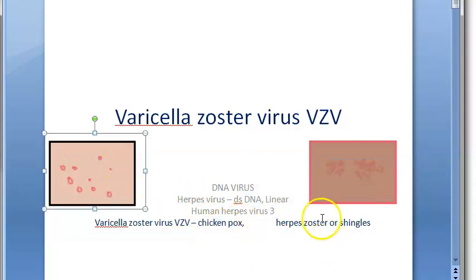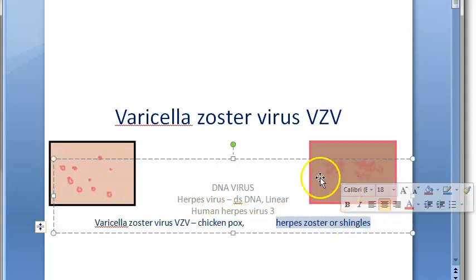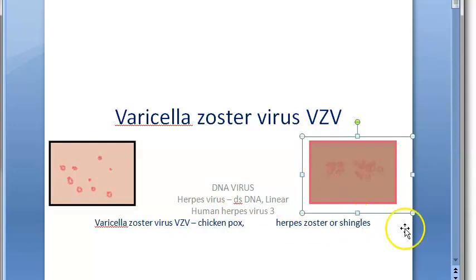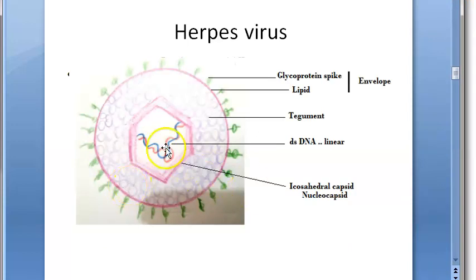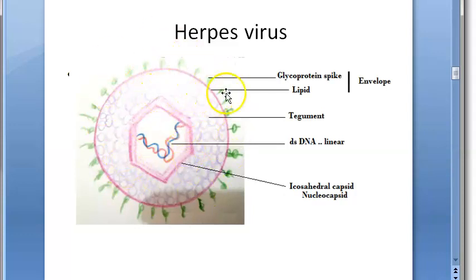It also causes herpes zoster or shingles. We have seen details about these diseases and the structure of the herpes virus — the double-stranded linear DNA, the icosahedral capsid, nucleocapsid, tegument, and a lipid envelope with glycoprotein spikes. You need to draw this diagram if they ask about lab diagnosis, because you need to know how to identify this virus.